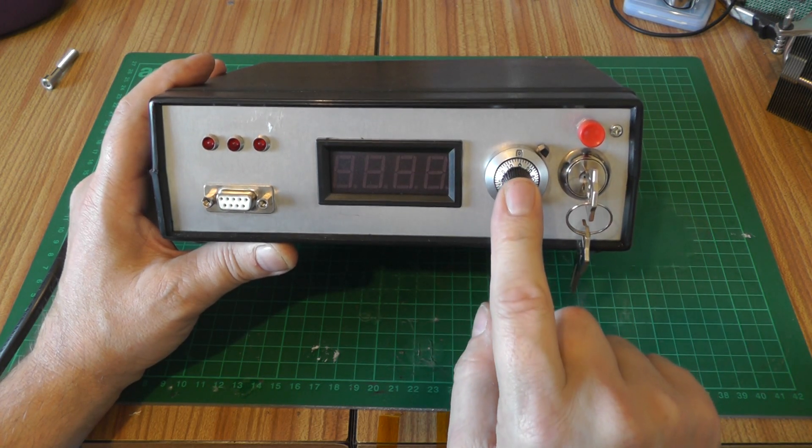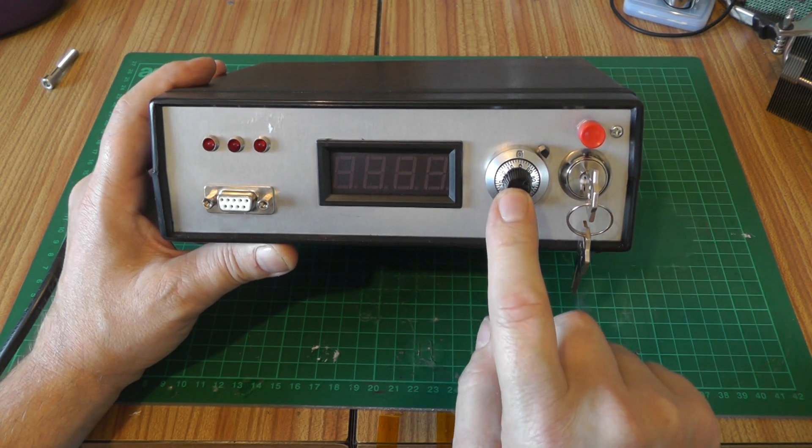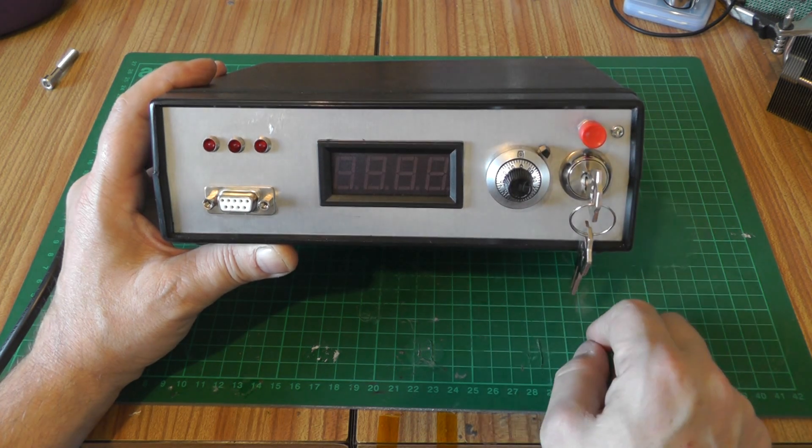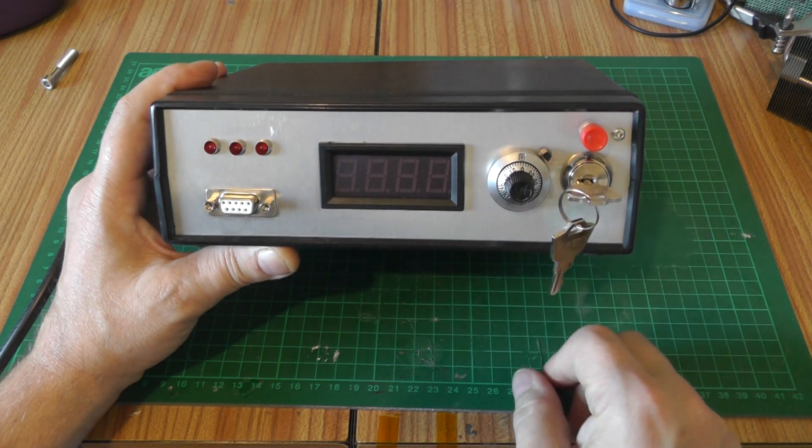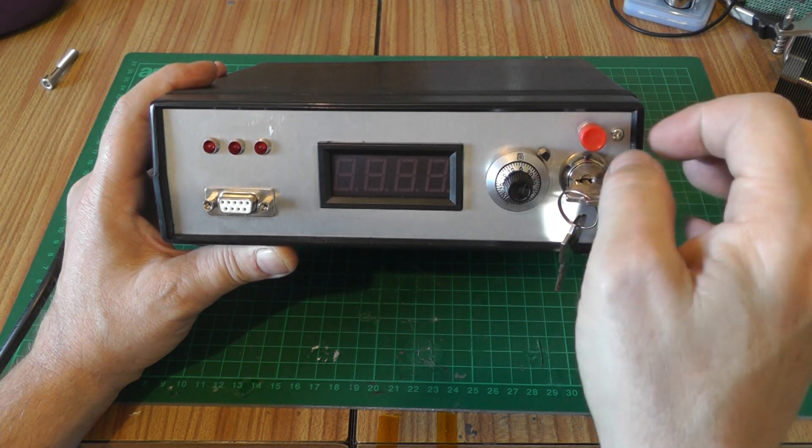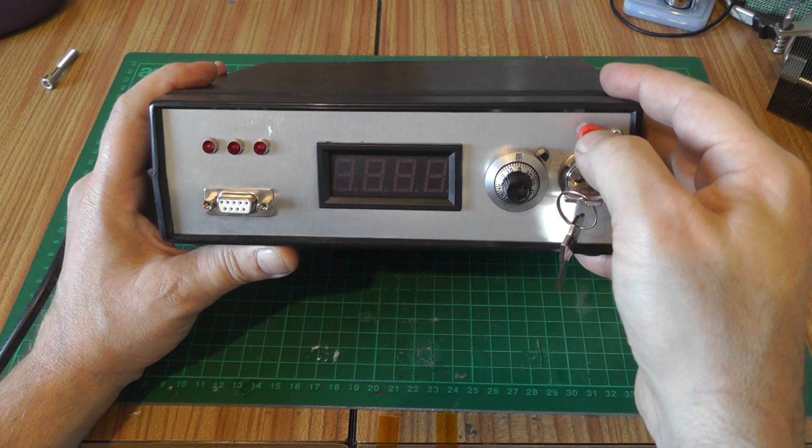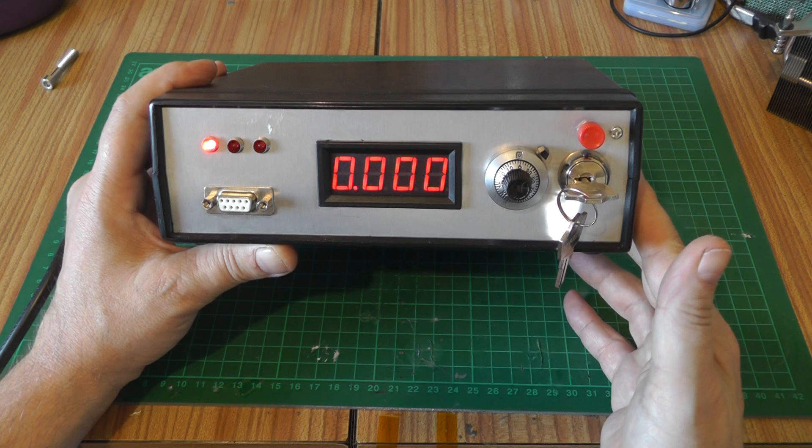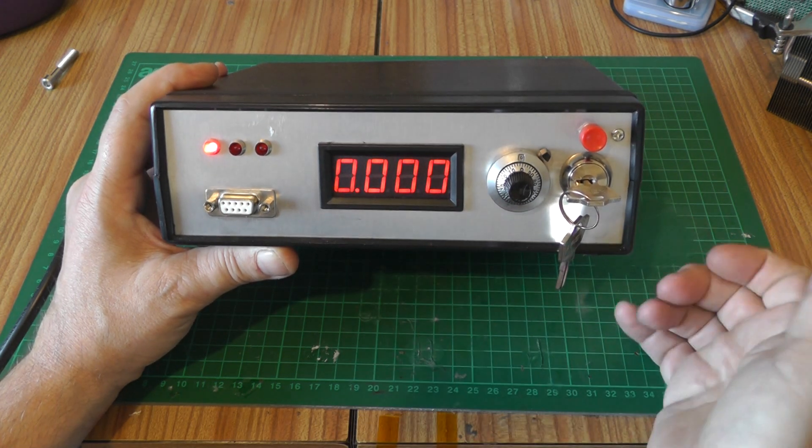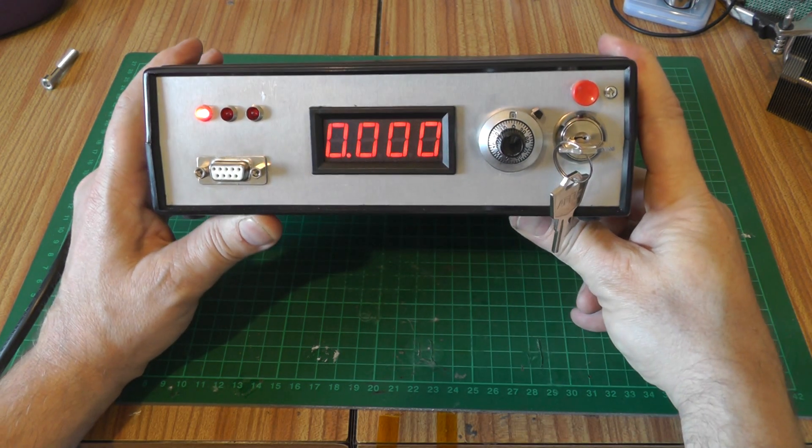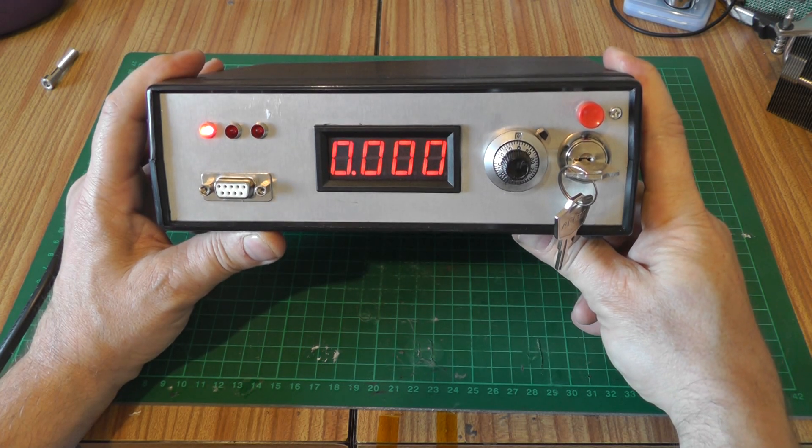We've got an ammeter regulator on the front, the 10 turn vernier pot for the current regulator circuit, a key switch and a power on push switch. If I turn the key switch, nothing happens. And only when we press the power on button does the relay click and everything power up. Currently it's reading zero because we've got nothing connected to it. But very nice looking front panel indeed, I think.